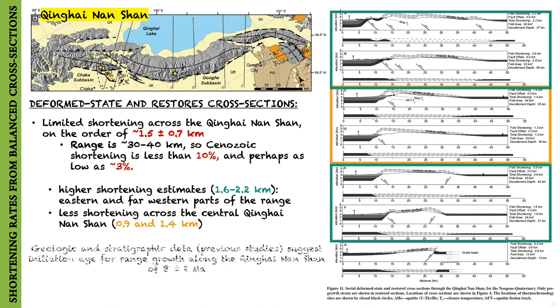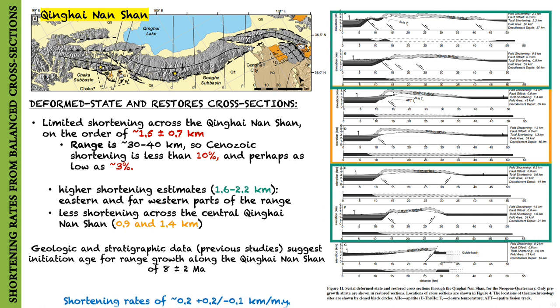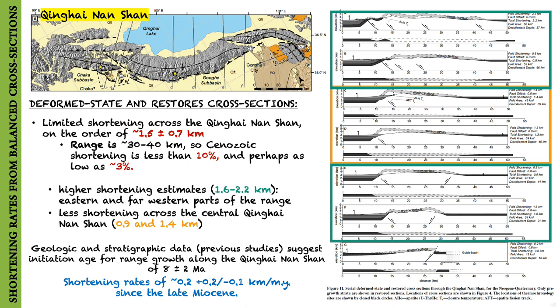Considering that previous studies suggest an initiation age for range growth along the Qinghai-Nanshan of 8 plus or minus 2 million years ago, this implies average shortening rates of around 0.2 plus 0.2 or minus 0.1 km per million year since the late Miocene.